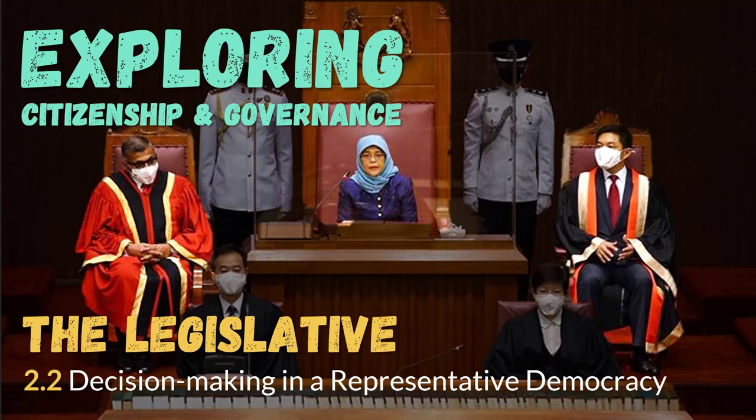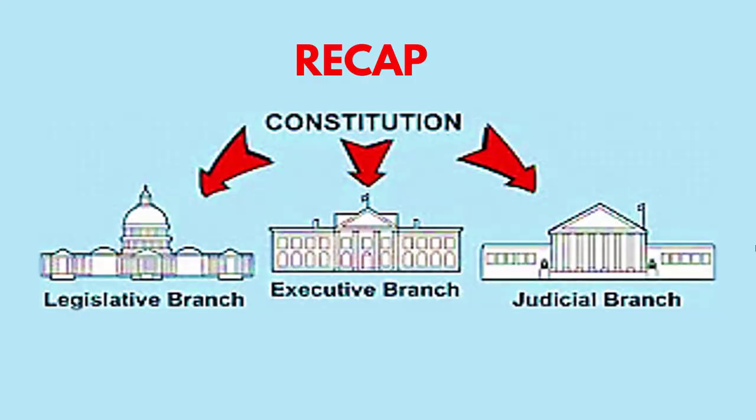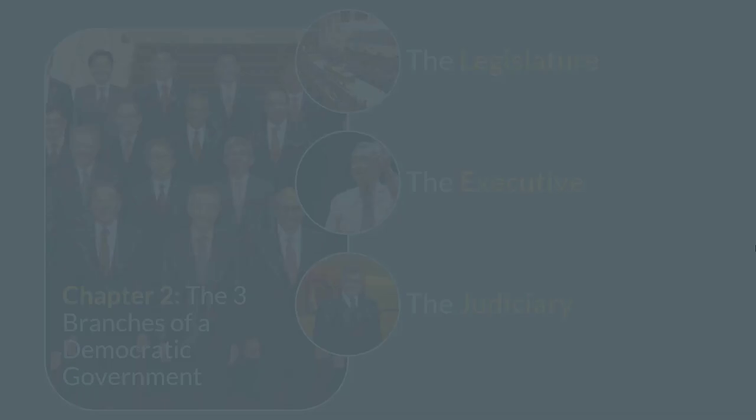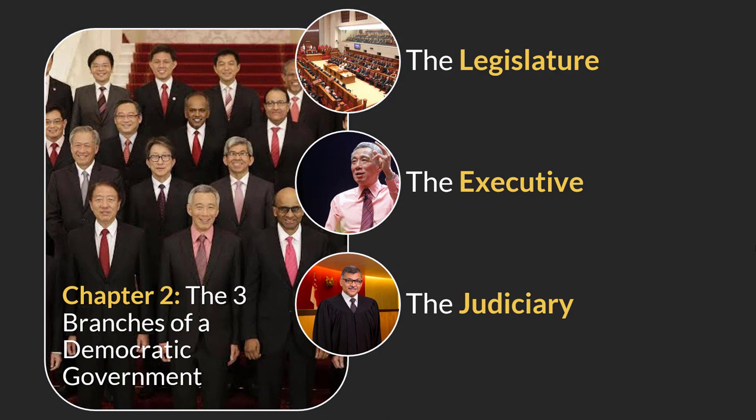Good afternoon, ladies and gentlemen. We are exploring the legislative as part of chapter 2.2, Decision-Making in a Representative Democracy. Before we start, let's do a quick recap. The constitution represents the highest law in our land, which is Singapore. It's constituted of three different branches: the legislative branch, the executive branch, and the judicial branch. Are you ready for the legislature? Let's go!